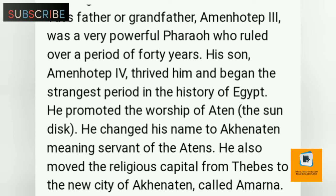His son Amenhotep IV succeeded him and began the strangest period in the history of Egypt. He promoted the worship of Aton, the sun disk. He changed his name to Akhenaten, meaning 'servant of the Aton.' He also moved the religious capital from Thebes to the new city of Akhenaten, called Amarna.